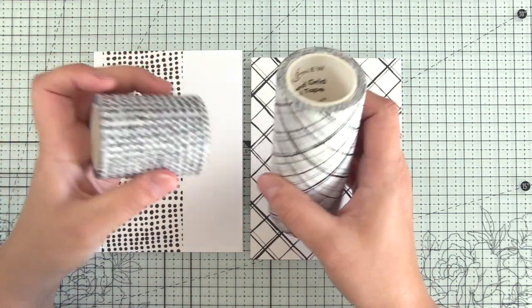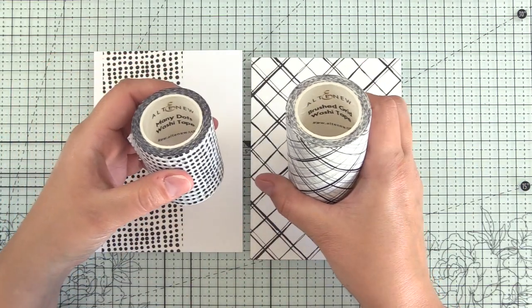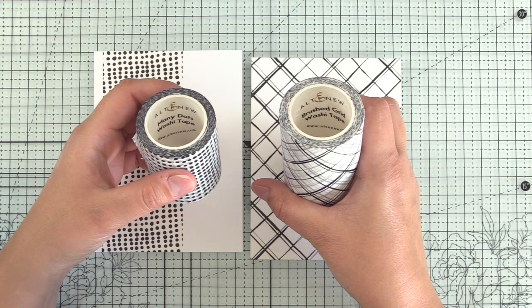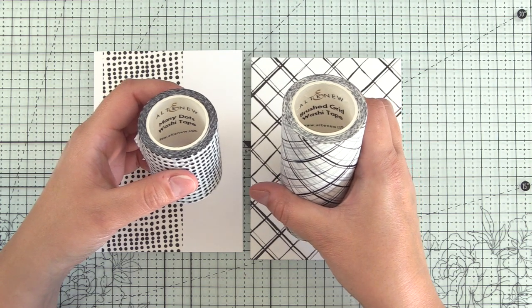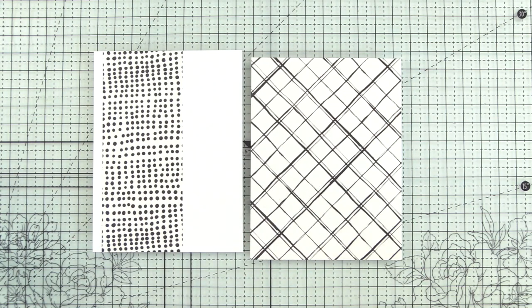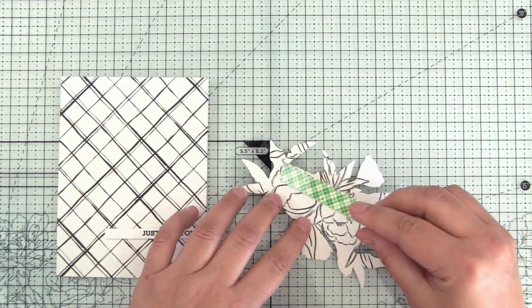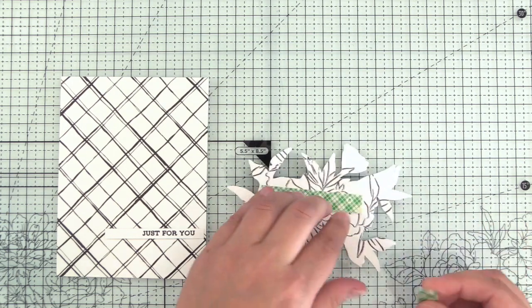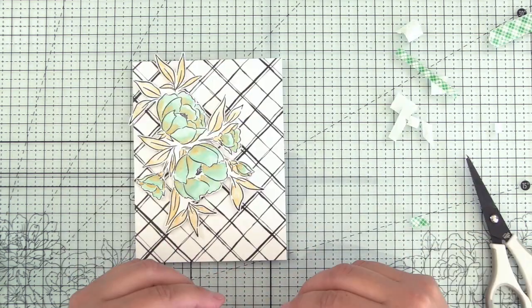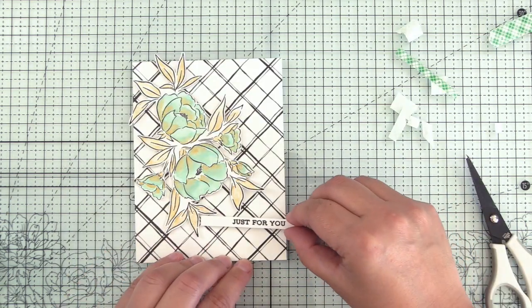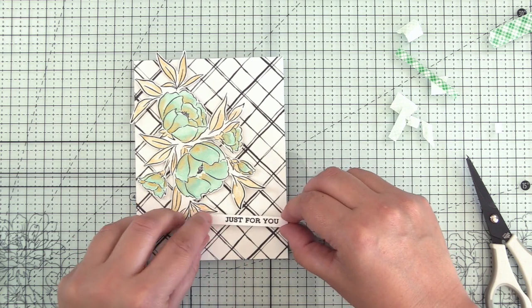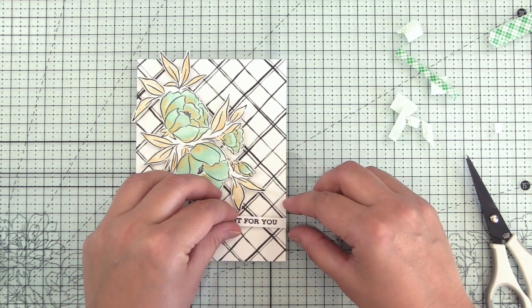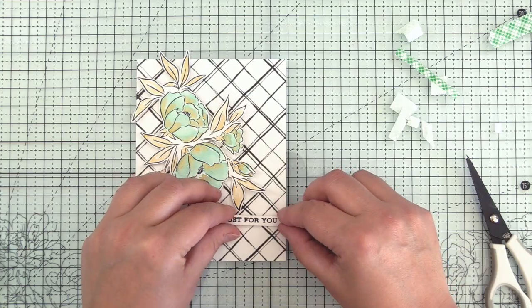So here I have two washi tapes. I have the mini dots washi tape and brushed grid washi tape. One you can see is a more narrow strip, whereas the other one is going to cover your whole card front. I'm going to use the grid washi tape for this card. I'm going to pop up my watercolor piece and my cinnamon strip from the original cinnamon strips stamp set on foam tape. And I'll have all of the supplies linked down below.